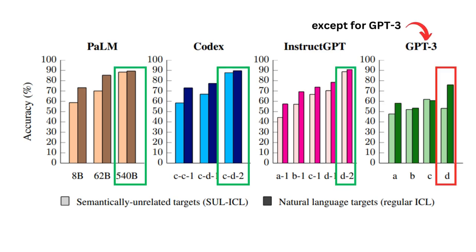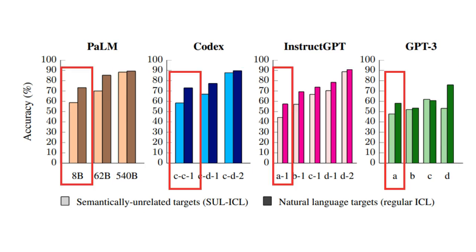What we see is that the biggest models, except GPT-3, are almost as good in the two scenarios, effectively learning something that wasn't in their training distribution and now being able to use that during testing. Yet, the smaller models have a harder time, being very close to random with a semantically unrelated target.